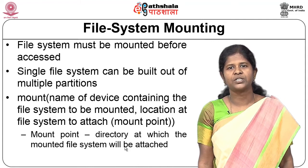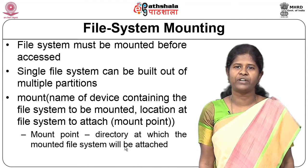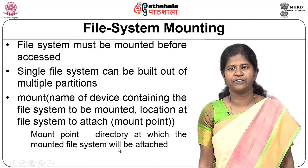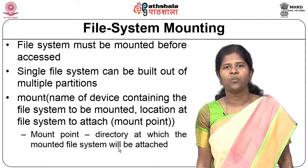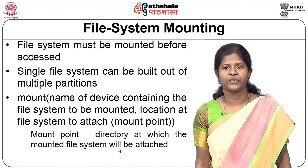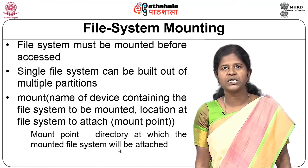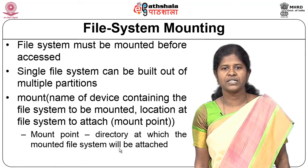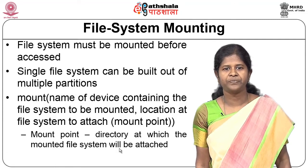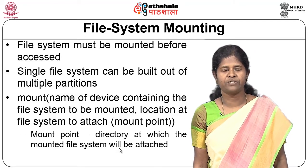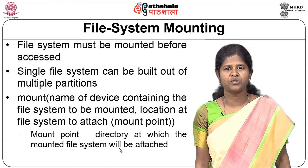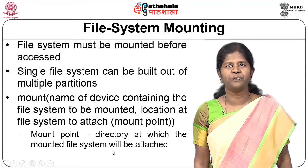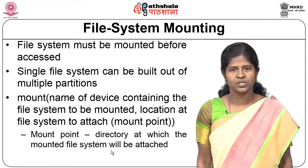To attach different file systems together into one file system, to logically attach them and to view the files in different file systems, we need to mount one file system onto the other. This is accomplished by using the mount command. The mount command takes as parameters the name of the device containing the file system which is to be mounted, and the location in the current existing file system to which this mounted file system should be attached. This directory or location is called the mount point.